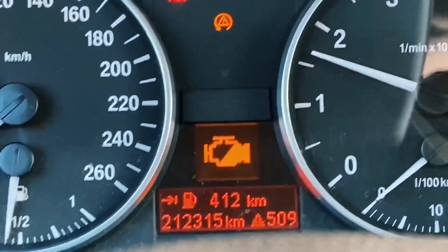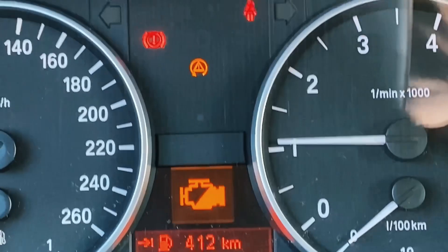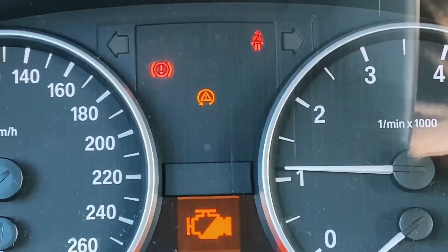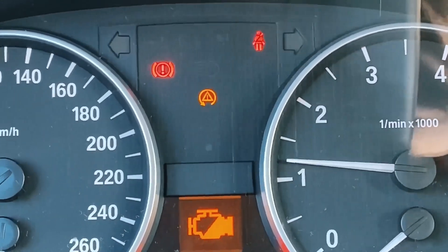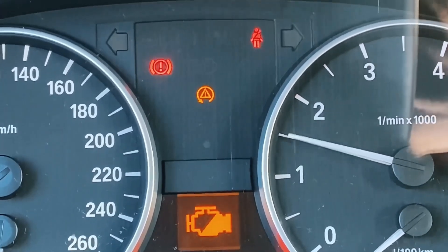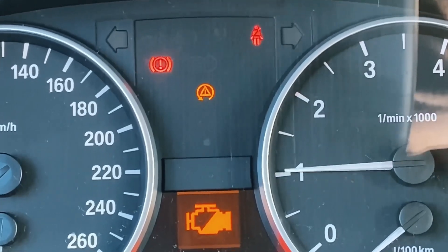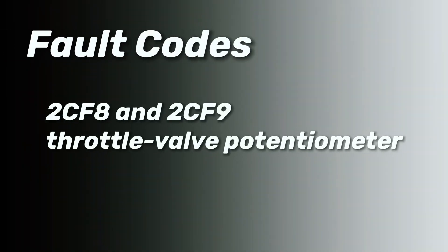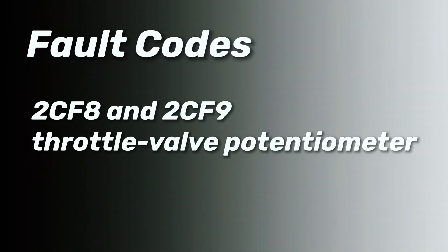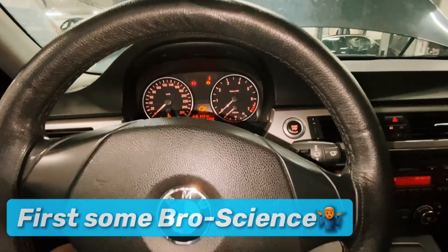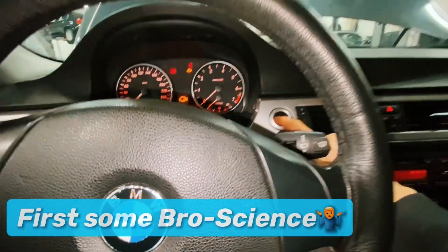This is going to be an interesting job. Well, there we are — throttle valve potentiometer fault code, or should I say codes, because the two potentiometers in these throttles are both faulty. The DME isn't seeing the voltage it needs to see, so it sets a fault code. Simple as that. That's the whole logic of fault code reporting.